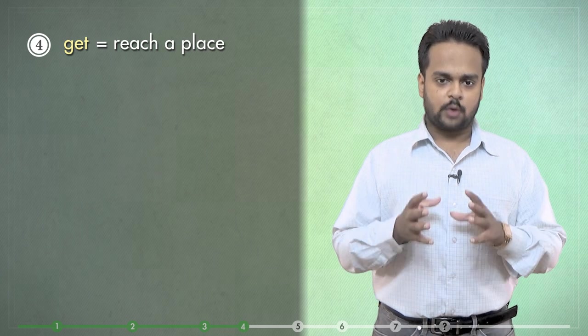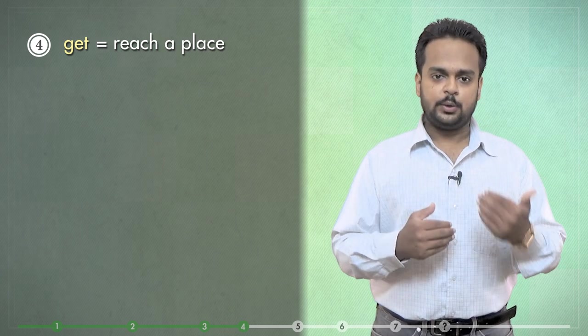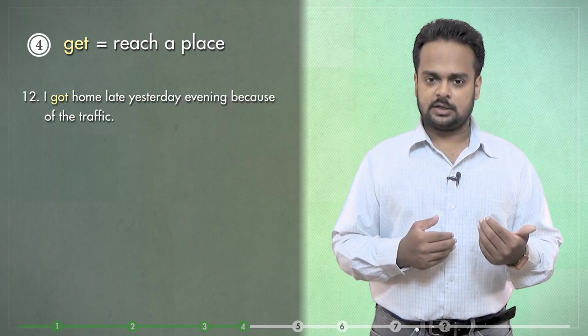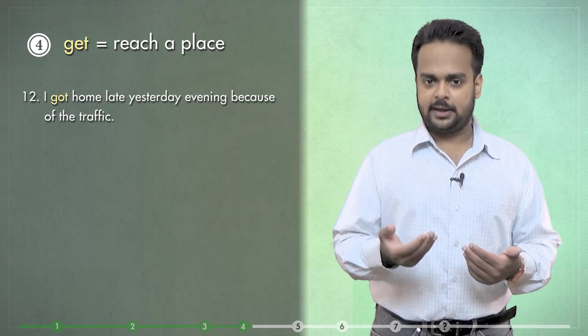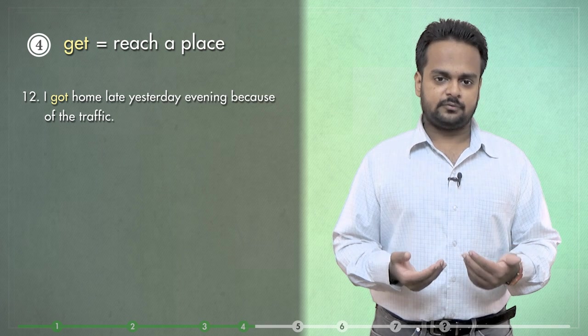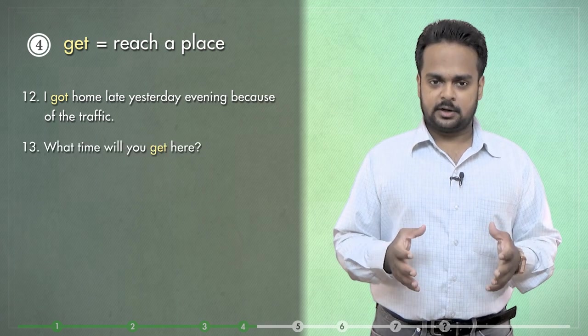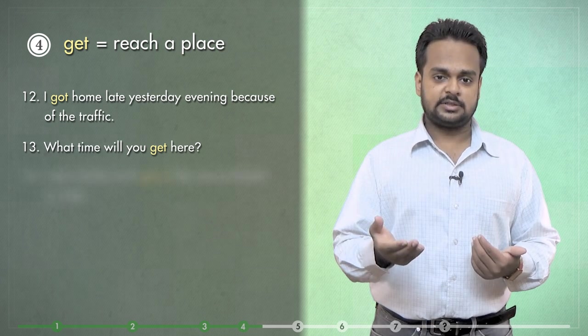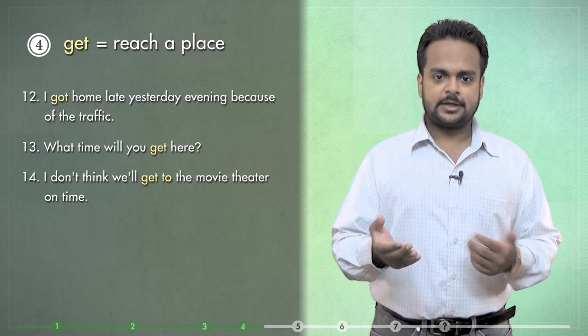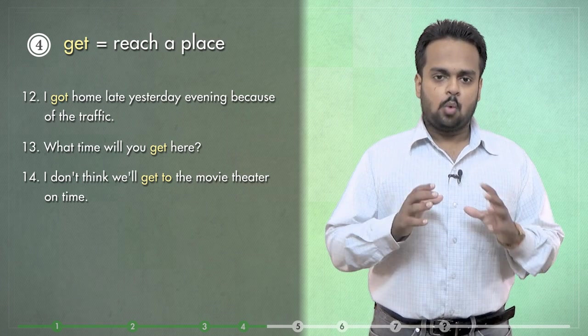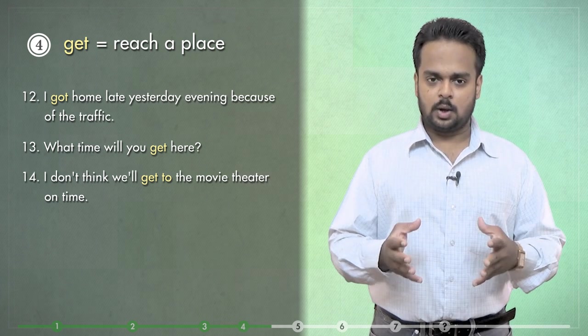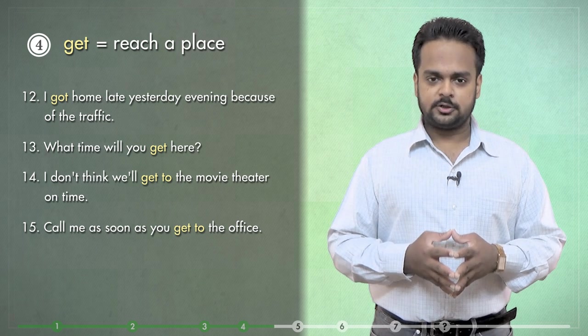The verb get is often used when we want to talk about travelling to mean to arrive or to reach a place. For example, I got home late yesterday evening because of the traffic. That means I reached home late. A common question that's asked on the phone is, what time will you get here? That means, what time are you going to reach this place? Here's another common example. I don't think we'll get to the movie theatre on time. That means we're running late and we're going to miss the start of the movie. And here's one last example. Call me as soon as you get to the office.